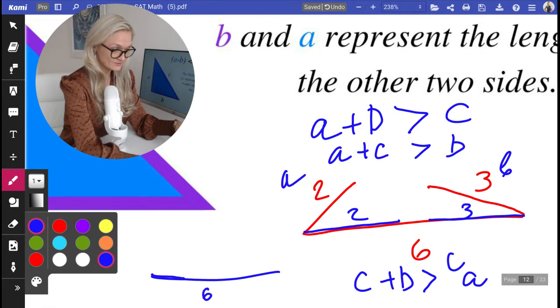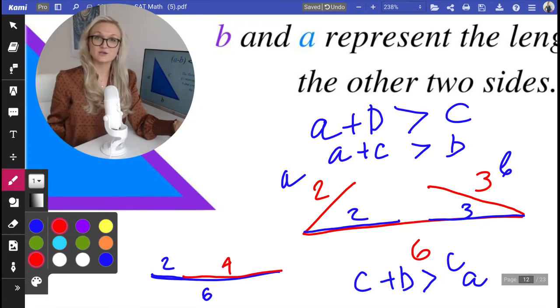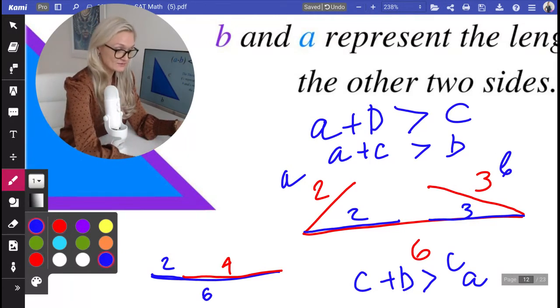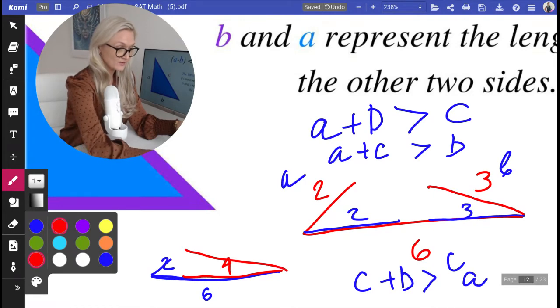Does that look like a triangle? I don't think so. But if one side, let's say, was three and that side was four, we would actually have a triangle.